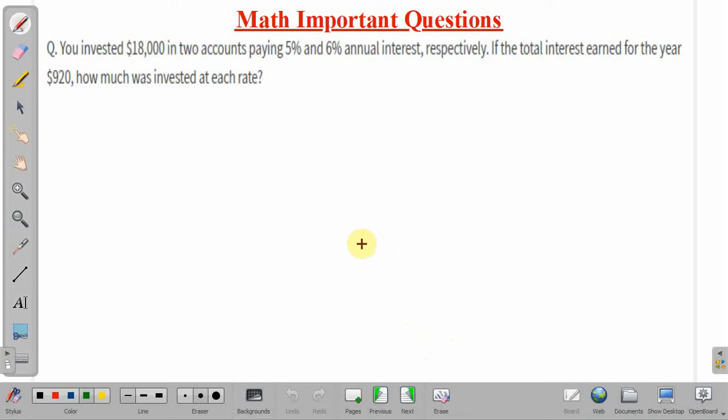What is given here? You have invested $18,000 in two accounts. For the first account, interest rate is 5% per annum annually, and for the second account it is 6% per annum. If the total interest earned is $920 per year, how much was invested at each rate?